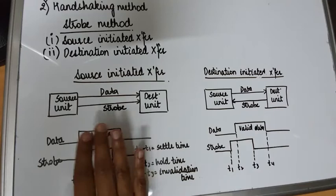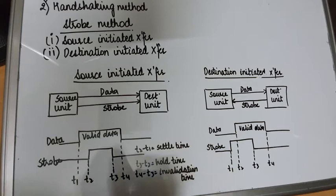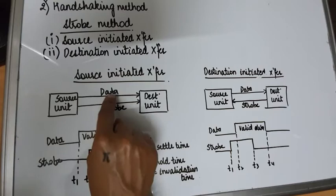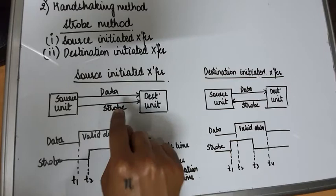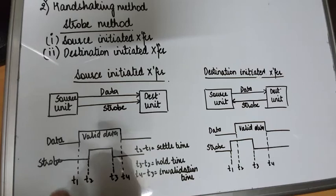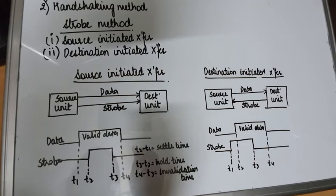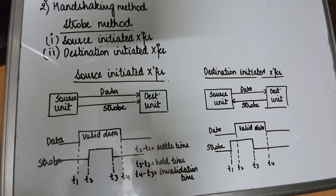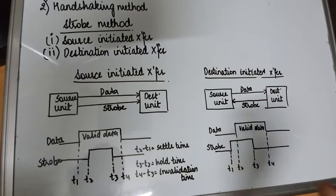This is how data transfer happens between the source and destination in two different ways: source-initiated and destination-initiated. However, both have a disadvantage. During source-initiated transfer, the source unit puts data on the bus and enables the strobe signal, but after the hold time it disables the strobe with no signal from the destination unit confirming whether it received or correctly read the data.